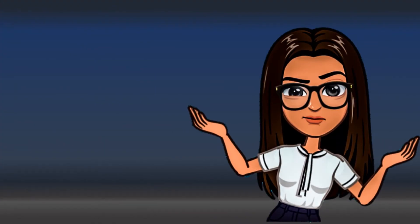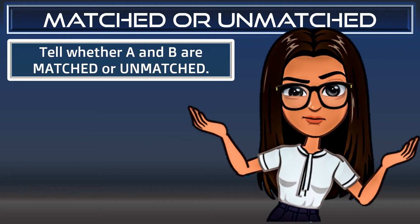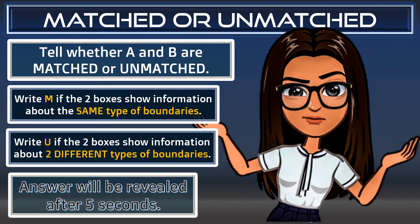That's our lesson for today — do you find it easy? Let me see your mastery with another set of activities. This time you will use your visual ability. You need a sheet of paper and a pen — I have 10 items. In every item I will show you two boxes containing either an illustration or words. If both boxes are about a specific type of boundary, write capital letter M, which stands for matched. If the contents pertain to two different types of boundaries, write capital letter U, which means unmatched. You have only five seconds to finalize your answer, then the answer will be shown. Let's start the activity now.